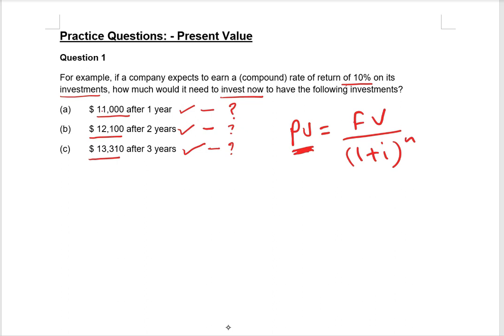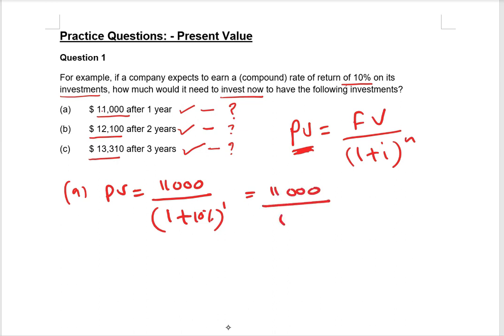First, part (a): the present value is equal to eleven thousand — that is your future value — divided by (1 + 10%) to the power one. So eleven thousand divided by 1.1 to the power one equals eleven thousand divided by 1.1, which gives you ten thousand. So you need to invest ten thousand dollars in order to get eleven thousand after one year.